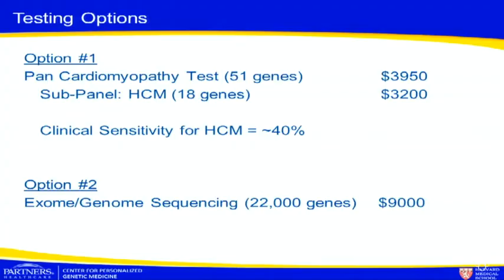This is a typical family with a dominantly inherited disorder, and we would want to do genetic testing to predict the potential onset of disease in other family members. The question is: which test do we do? We now have the ability to do both targeted testing — either a full cardiomyopathy panel or the subpanel for just those genes known to cause HCM, with a clinical sensitivity of about 40% — or exome or genome sequencing to look at all genes. I'd like to see a raise of hands: how many would choose option one versus option two?